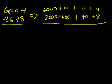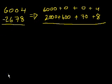2 is less than 6, that's fine. But 6 is not less than 0, so we have to do something there. 7 is not less than 0, and 8 is not less than 4, so we're going to have to do some regrouping. Let's take 1,000 from the thousands place, so all we're left with is 5,000.